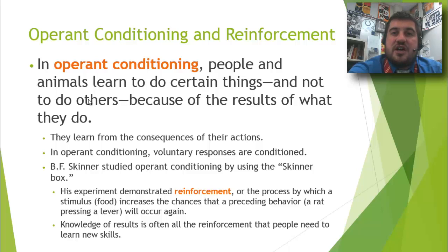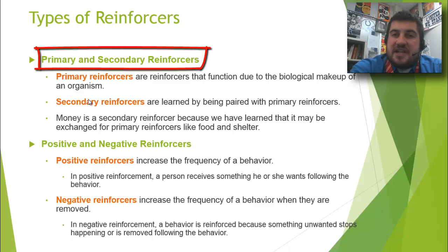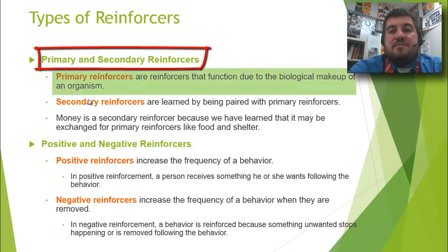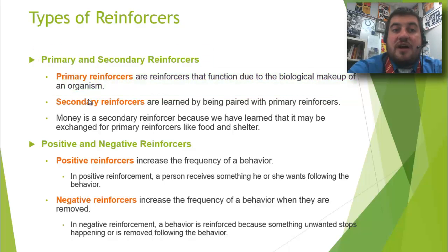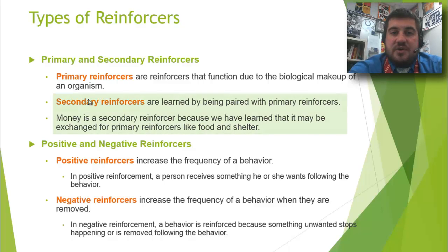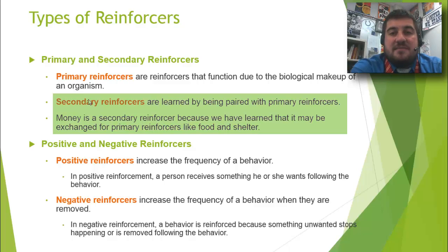Knowledge of results is usually all that people need in order to learn new skills. Let's discuss the different types of reinforcers — primary versus secondary. Primary reinforcers function due to the biological makeup of an organism: food, water, shelter, sex. Secondary reinforcers are paired with primary reinforcers. Money is a huge secondary reinforcer because we've learned that money can be exchanged for primary reinforcers like food and shelter.